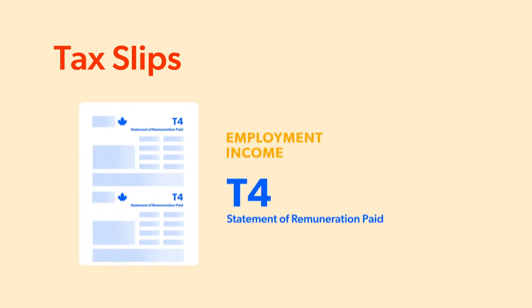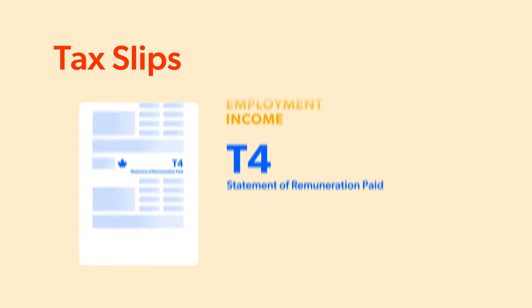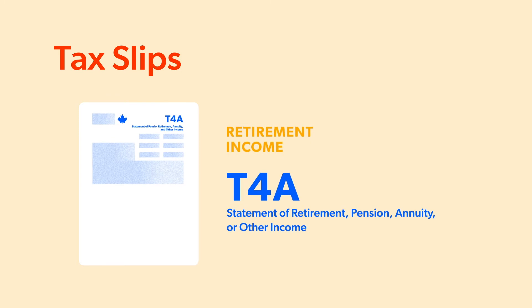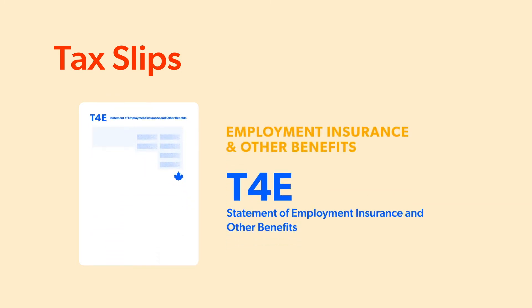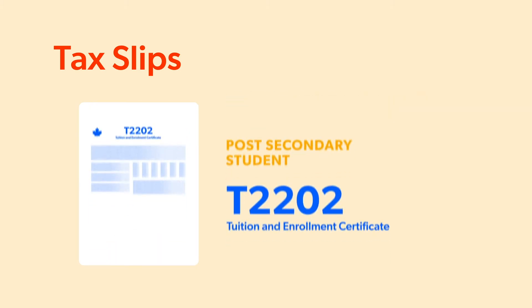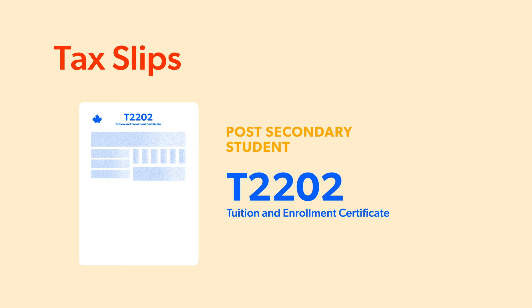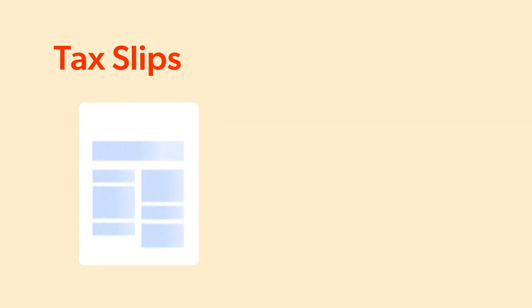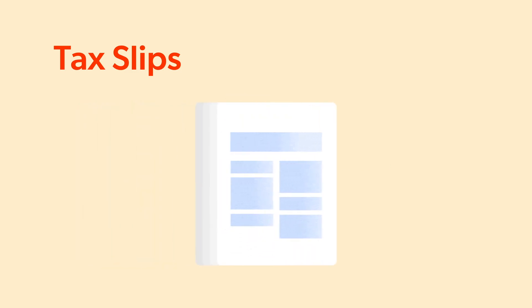If you were employed, you will receive a T4. If you're retired, you'll have a variety of T4As. If you received EI or other benefits, you'll receive a T4E. If you received social assistance or workers' comp, you'll receive a T5007. If you were a student, you'll receive a T2202. There are more, but if you receive a document with a title that begins with the letter T, it's a document you need to bring to your tax filing appointment.